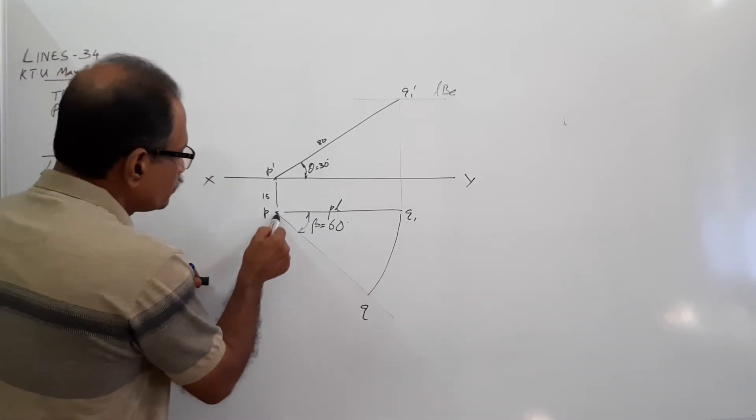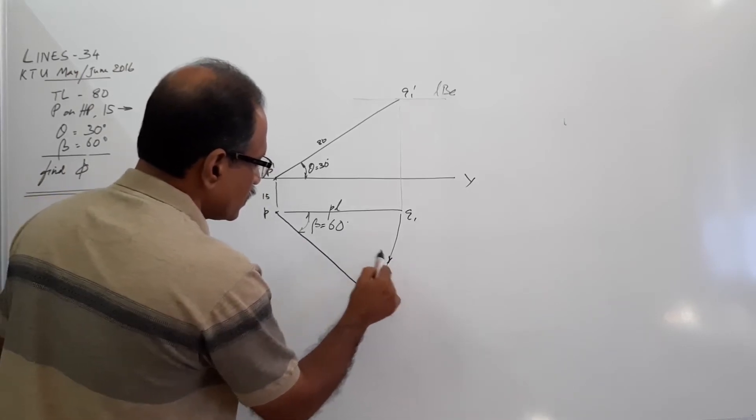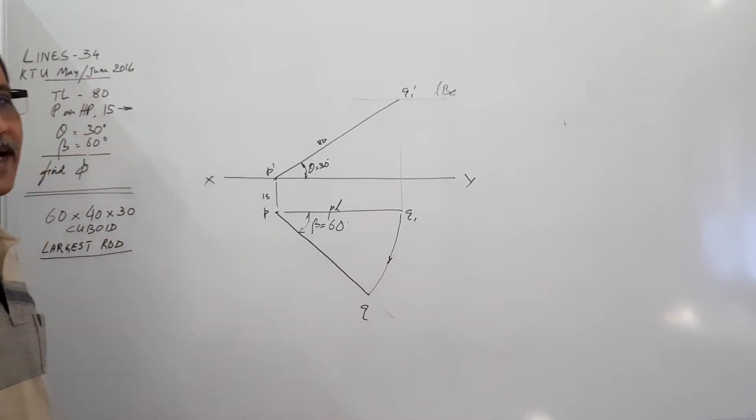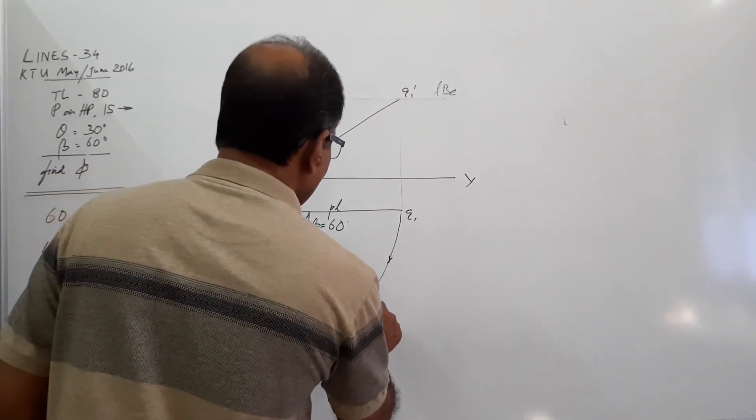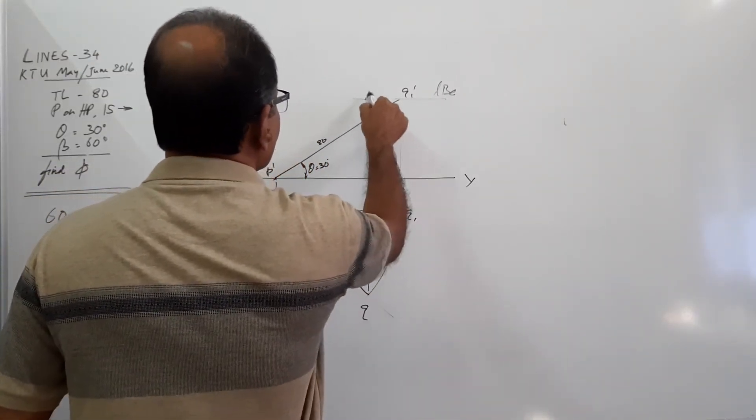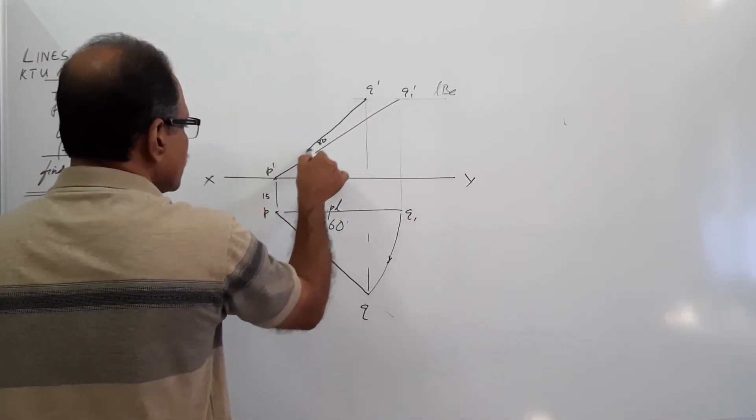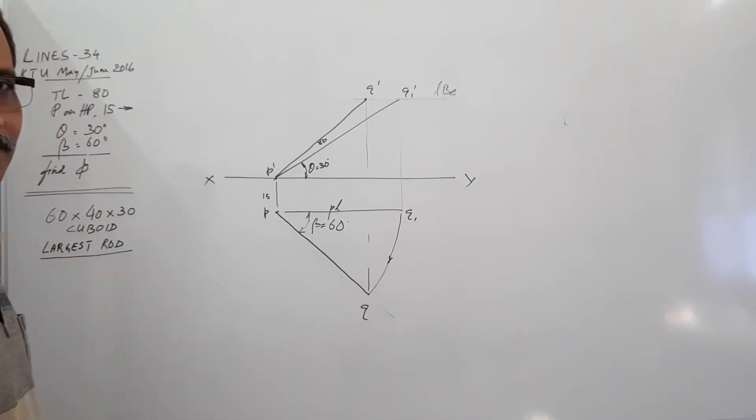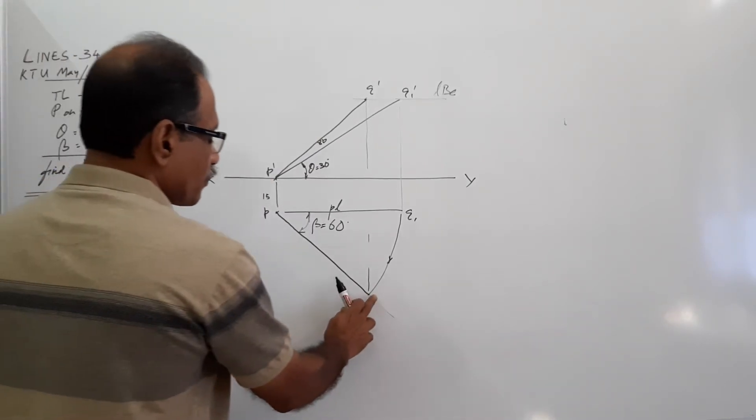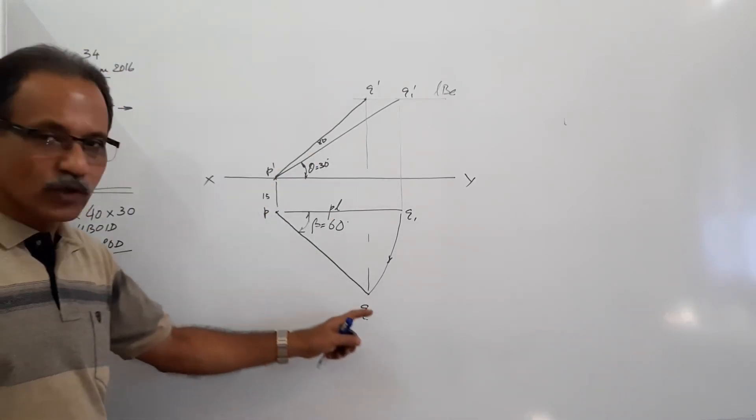What is PQ? PQ is the final plan. If this is Q, where is Q dash? Project it up. Q dash. What is P dash Q dash? P dash Q dash is the final elevation of the line. P dash Q dash is the final elevation, PQ is the final plan.